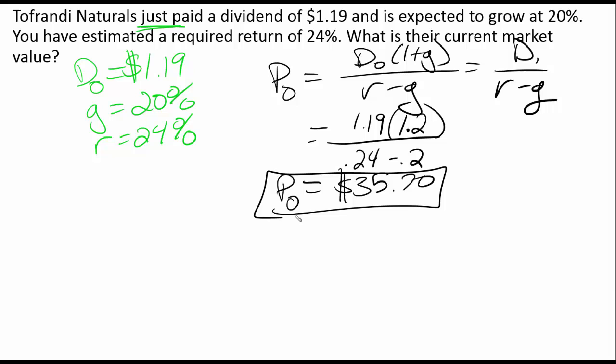Now, remember, it is very important that we figure out and we determine exactly which dividend it is at which time period it's coming through. Because if we left out that growth rate, let's say that we just put in 1.19 divided by 0.24 minus 0.2, that means we would end up with a value at $29.75.